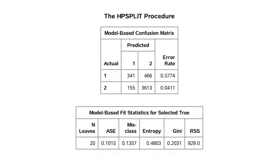SAS also generates what's called a model-based confusion matrix, which shows how well the final classification tree performed. The total model correctly classifies 42% of those who have smoked regularly — that is, 1 minus the error rate of 0.58 — and 96% of those who have not, again 1 minus the 4% error rate. So we are clearly better able to predict those who are protected against regular smoking during adolescence and less likely to predict those who are at risk for regular smoking.